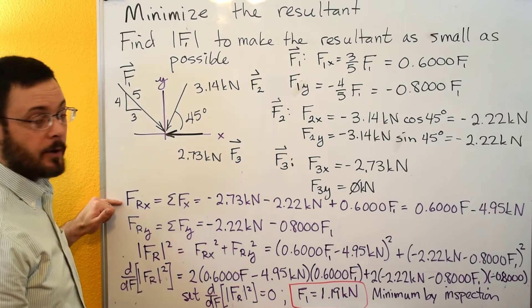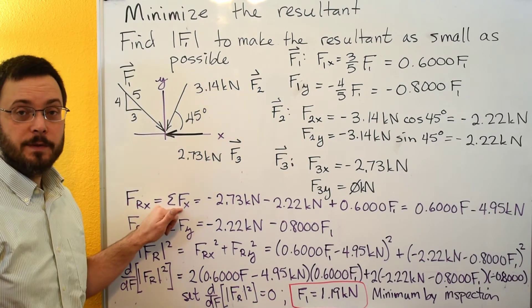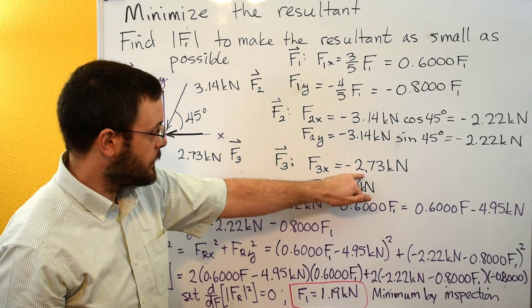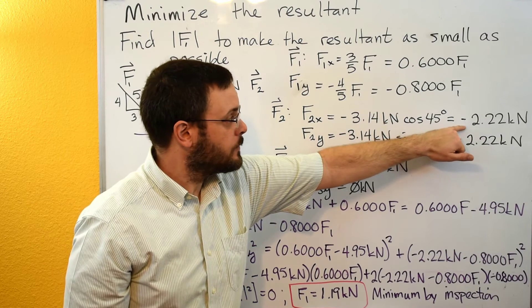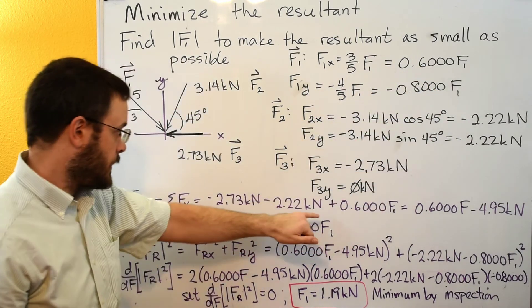We can then sum up our resultant. So our X component of our resultant is the sum of forces in X. So that would be the negative 2.73 here, the negative 2.22 here, and the positive 0.6 F1 here.